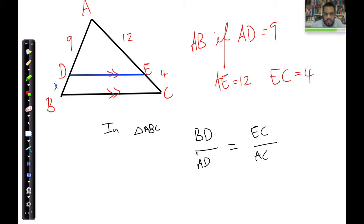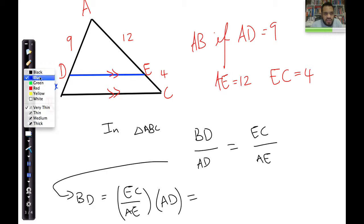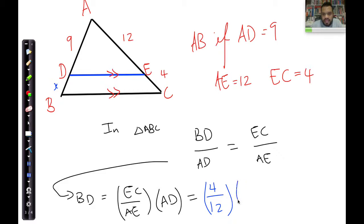So I want to solve for BD, and that tells me that BD is equal to EC over AE multiplied by AD. And what does that give me? Let's substitute and we can see our values. EC is 4, AE is 12, and AD is 9. Well, 9 times 4 is 36, and 36 divided by 12, and then the answer is going to be 3 units.